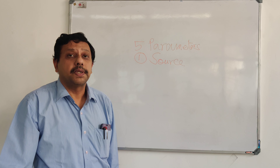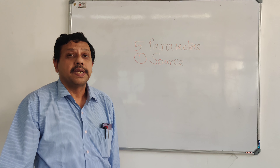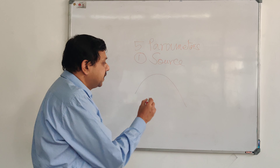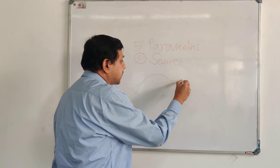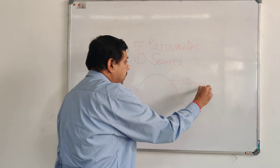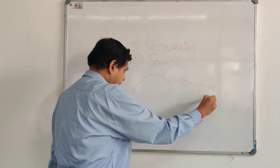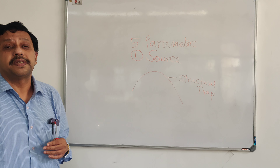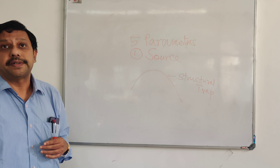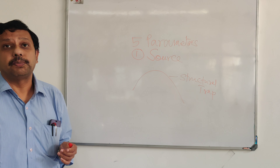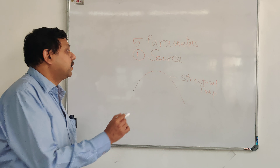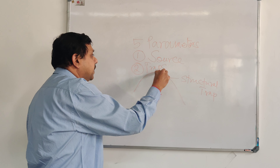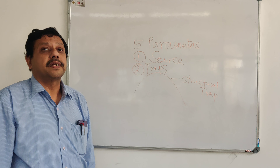After that, the hydrocarbon goes to a trap. If it is a structural trap, it is normal in nature, and this trap is known as a structural trap. Trap is very important to understand because in this trap the hydrocarbon is preserved. If the hydrocarbon is not preserved in the trap, it is not called a trap — it is called a breaching of trap. So the second point is understanding whether the trap exists, what is the integrity of the trap, and whether the trap is unexplored.